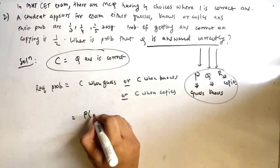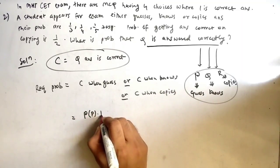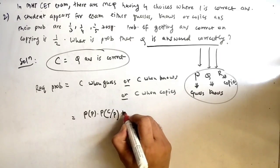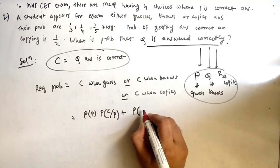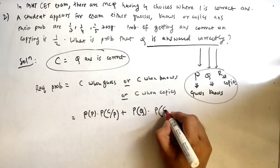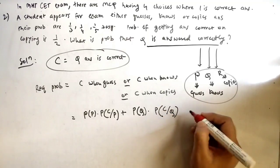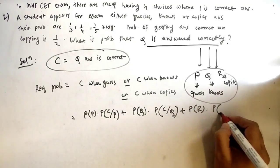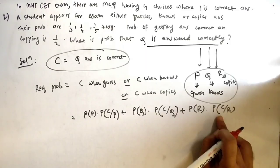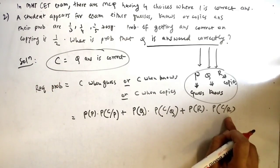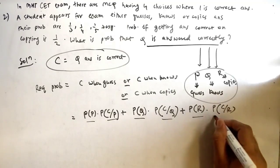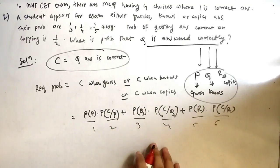Converting to mathematical form: P(P) × P(C|P) + P(Q) × P(C|Q) + P(R) × P(C|R). This means: probability he guesses times probability of correct answer given he guesses, plus probability he knows times probability correct given he knows, plus probability he copies times probability correct given he copies. We need all six terms — 1, 2, 3, 4, 5, and 6.